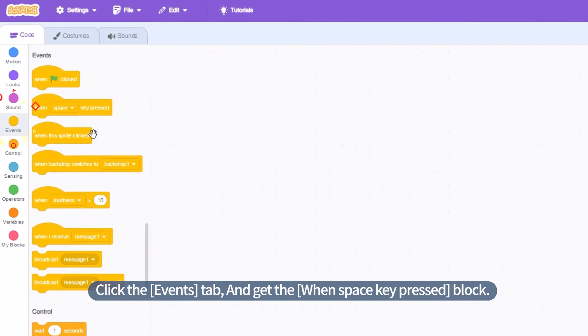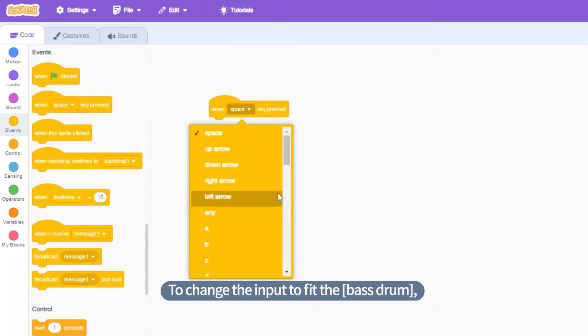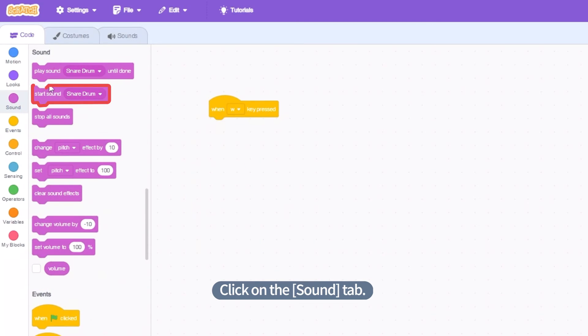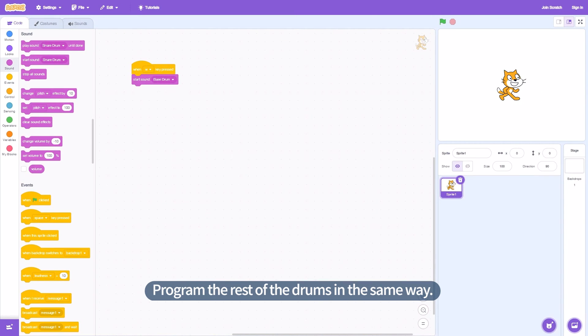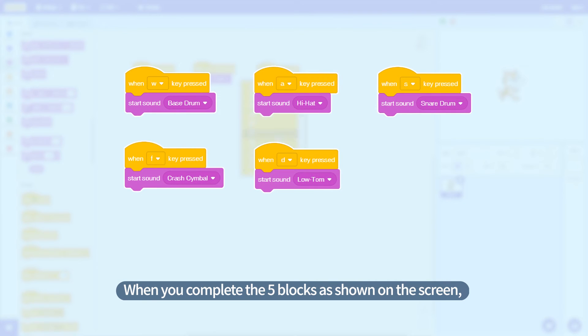Click the Events tab and get the block. To change the input to fit the bass drum, change to EW. Click on the Sound tab. Get the Start Sound Bass Drum block. Program the rest of the drums in the same way. When you complete the five blocks as shown on the screen, the drum programming is complete.